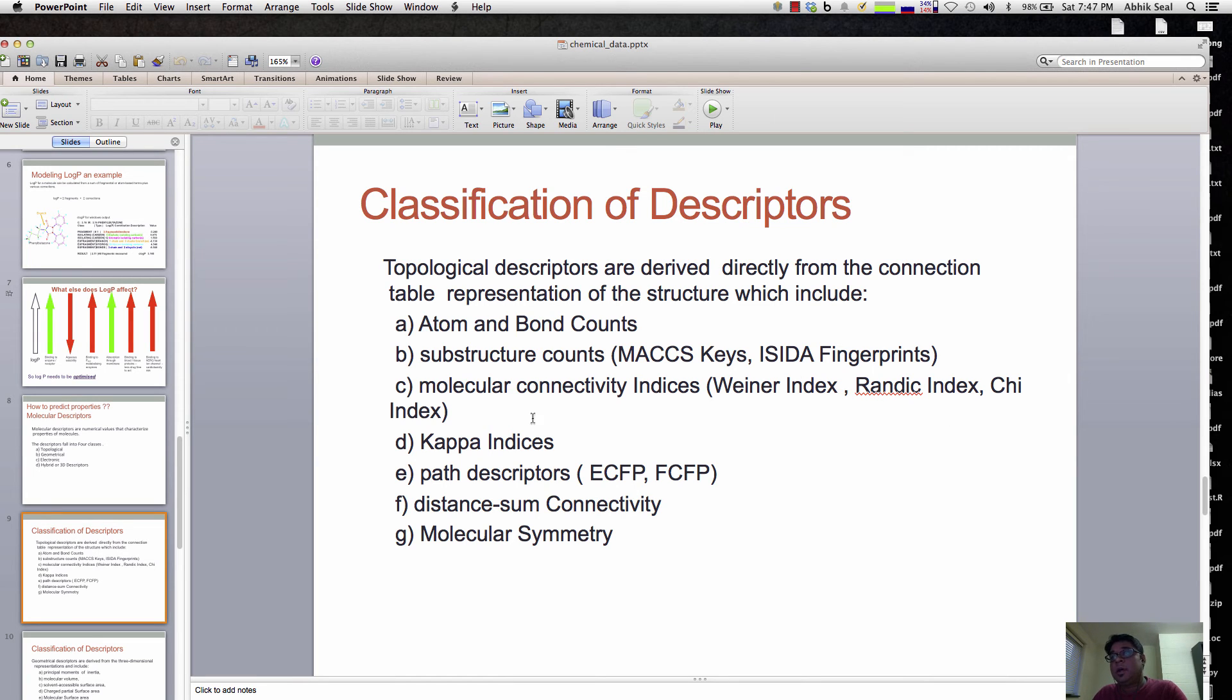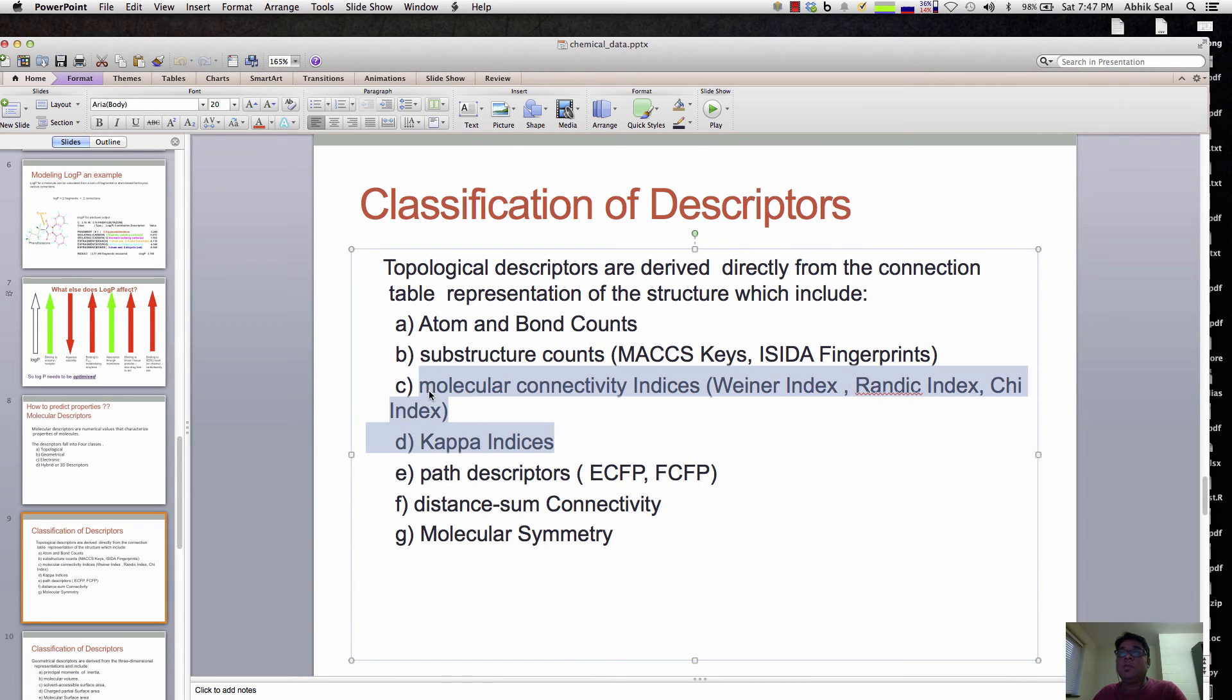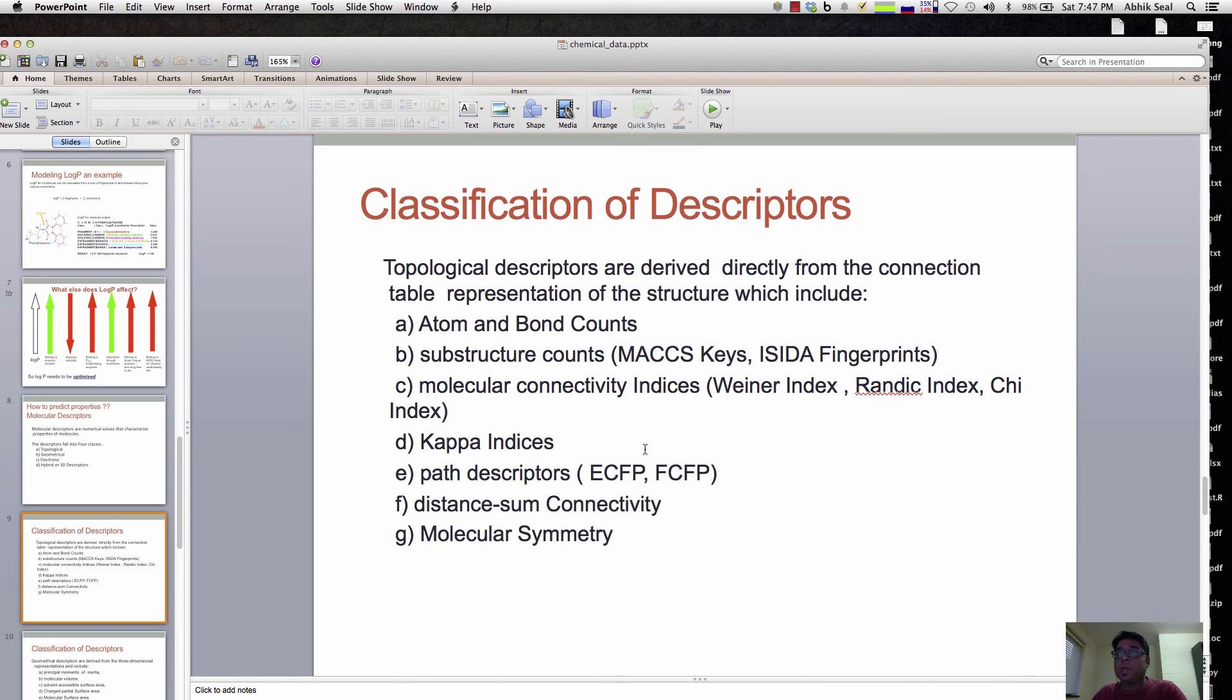There are other indices like the Wiener index, Randic index, the Chi index, and also the Kappa indexes. I won't go in depth of all these indices because these are mostly covered in the cheminformatics course. If you want to take the course, consider I571, where we go in depth of these indices and how they're calculated, or I can suggest a book.